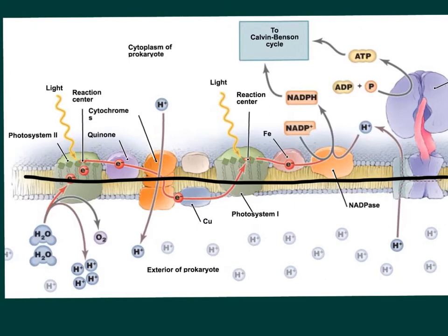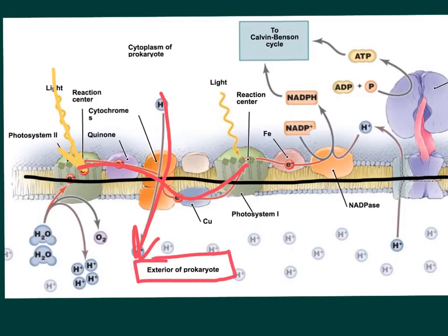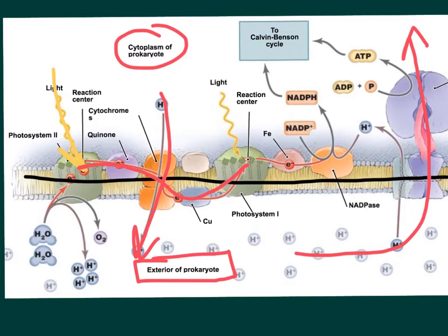So for photosynthesis, the light reactions happen inside the membrane. So light strikes one of the photosystems, and then we're going to move the electrons through the membrane. And as we do that, we'll pump hydrogens outside to the exterior portion of the prokaryotic organism. Once we get enough hydrogens on that side of the membrane, those hydrogens will then come back across inside the cytoplasm of the prokaryote, where they will make ATP.